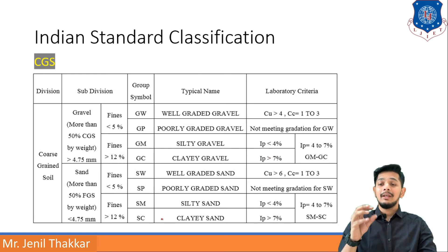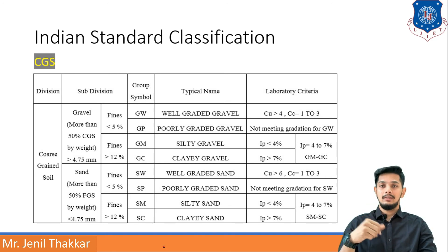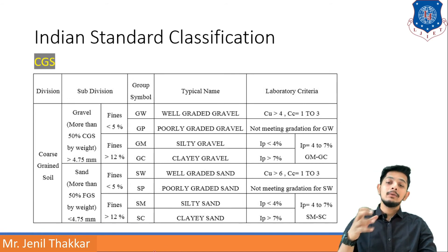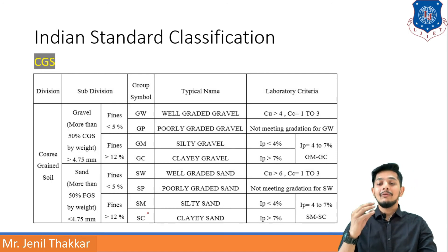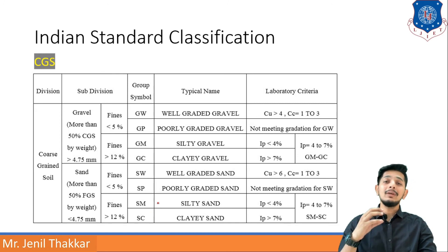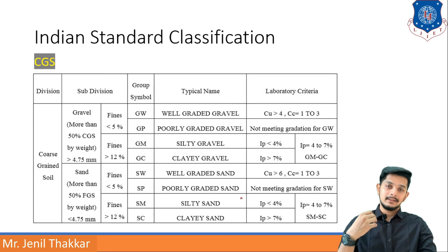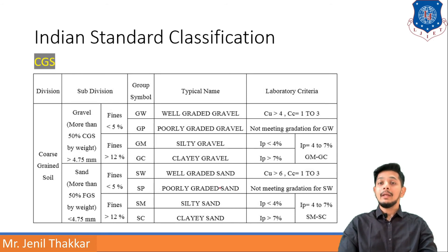For the sand side of CGS, if the size is less than 4.75 mm and fines are less than 5%, two groups are SW (well-graded sand) and SP (poorly graded sand). To distinguish them, check CU and CC: if CU is greater than 6 and CC is in range 1 to 3, it is SW. If these requirements are not matched, then it is SP.